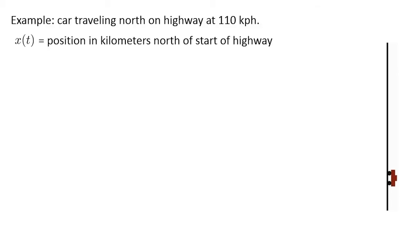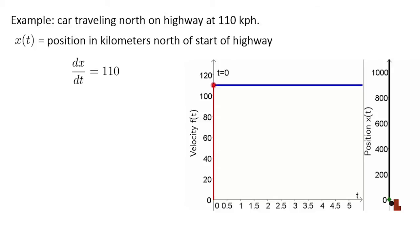Imagine that a car is traveling north along a highway at 110 kilometers per hour. Let x(t) denote the position of the car in kilometers north of the start of the highway. In this case, since the velocity is constant, the differential equation is simple. The velocity dx/dt equals 110. The graph of the velocity is pretty boring, just a horizontal line indicating a constant function. We can animate our car and make it move at the constant speed of 110 kilometers per hour.